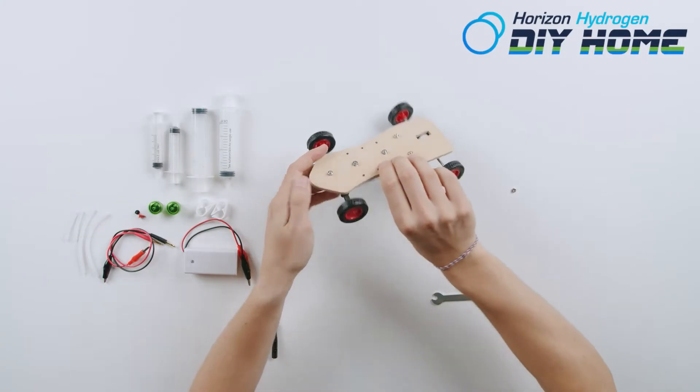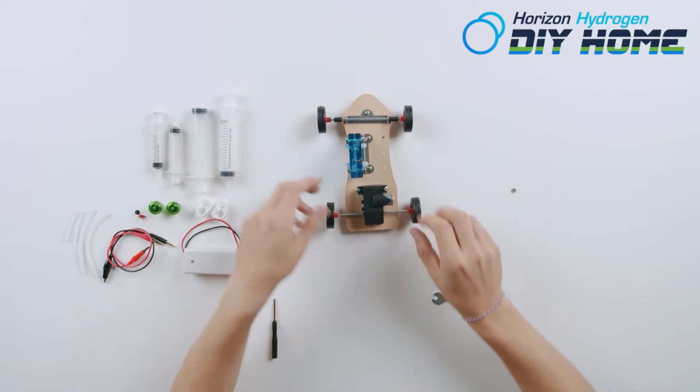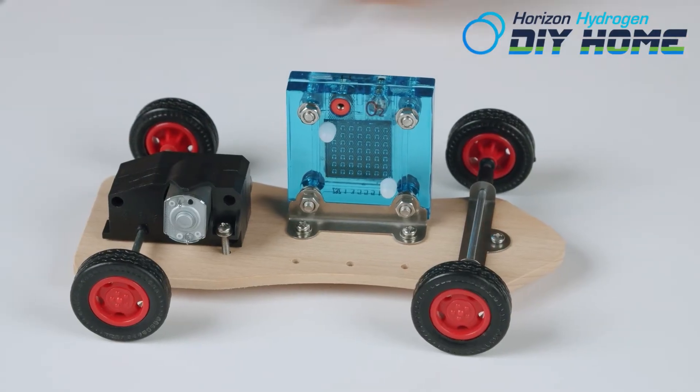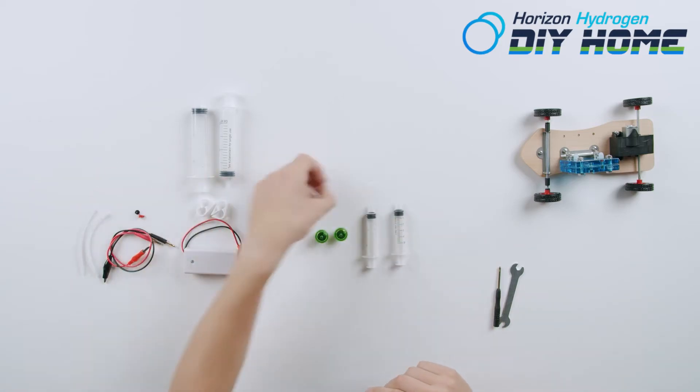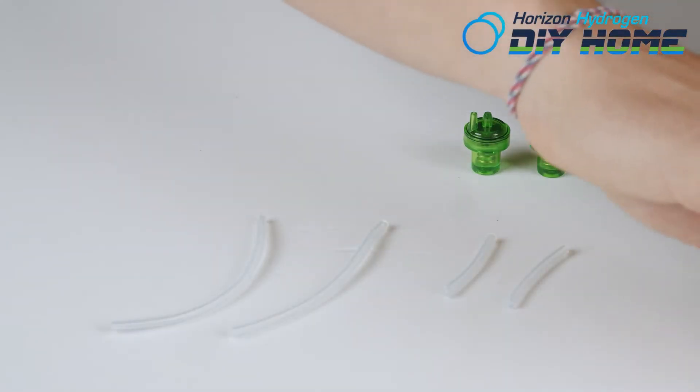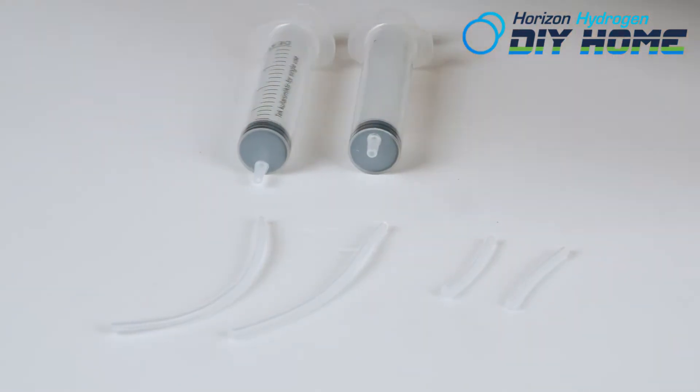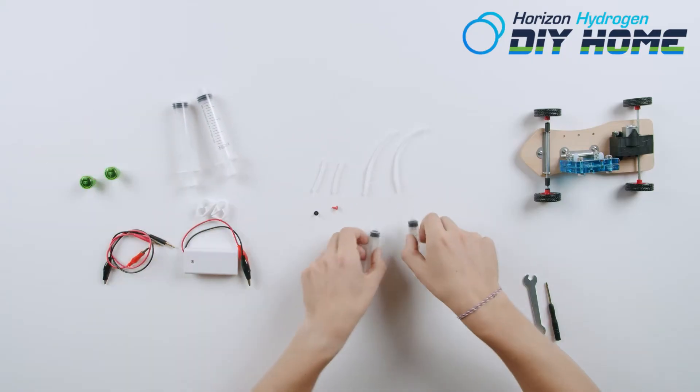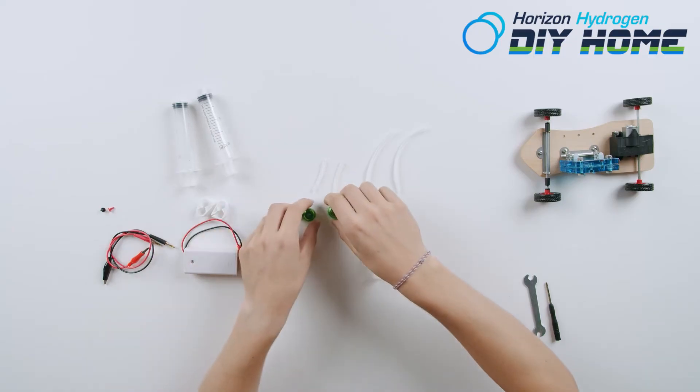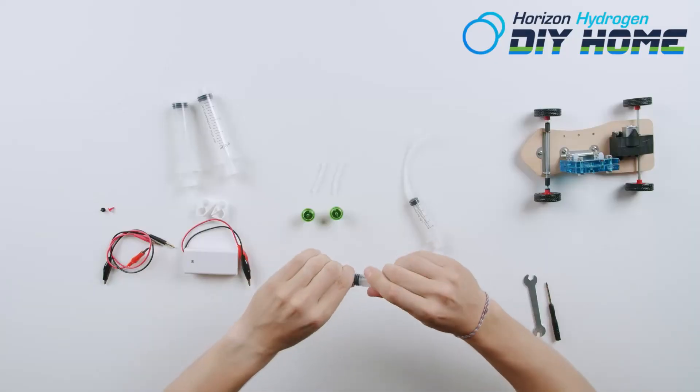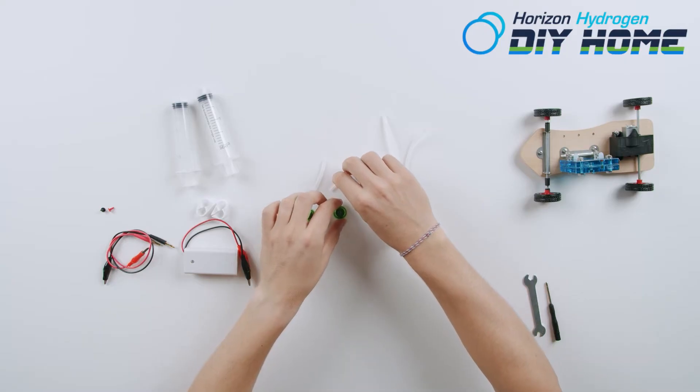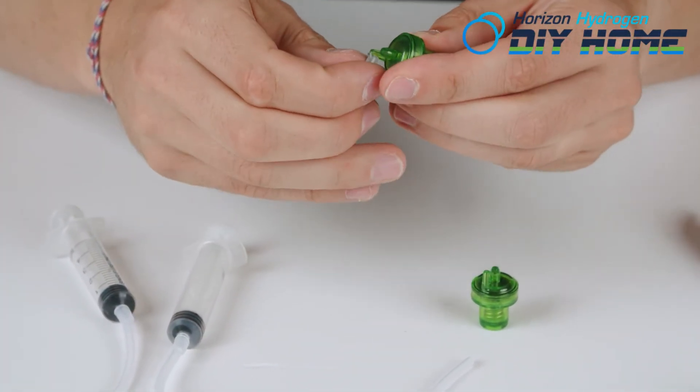Now choose between 5 milliliter syringe and 20 milliliter syringe. Test them out to see what works best for you. Pause the video now. Cut two pieces of silicone tubing to 3 cm and two pieces to 12 cm. Continue video. Insert the two 12 cm silicone tubing to the selected syringe.